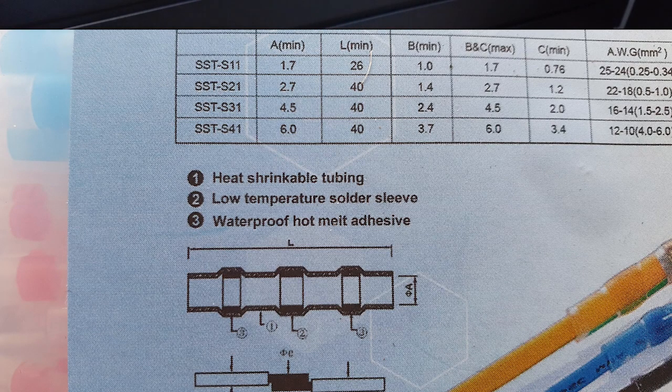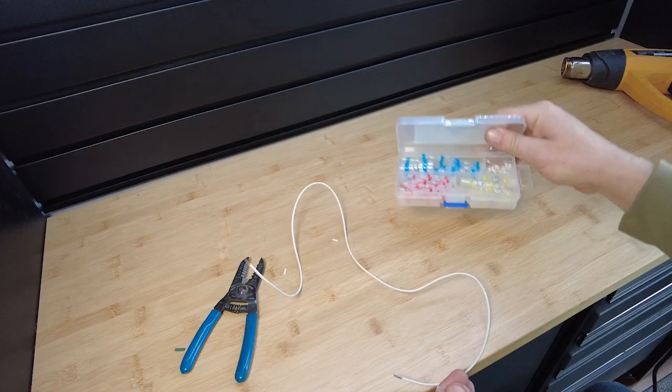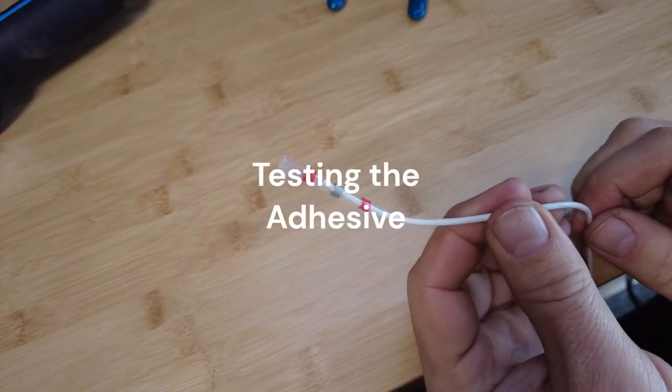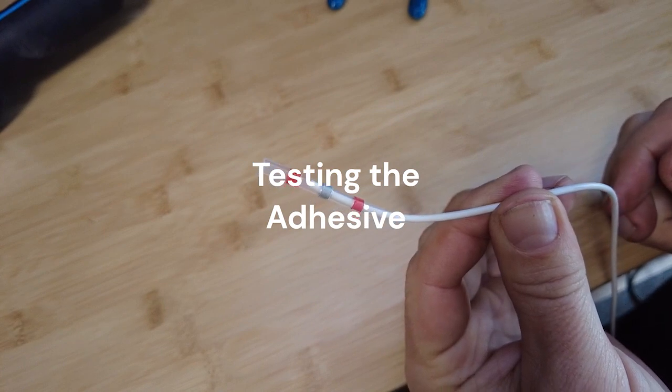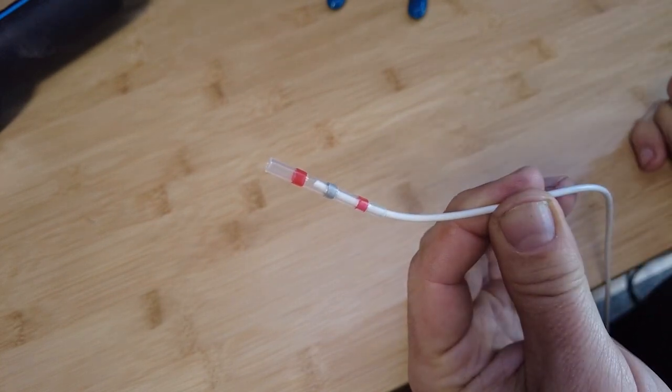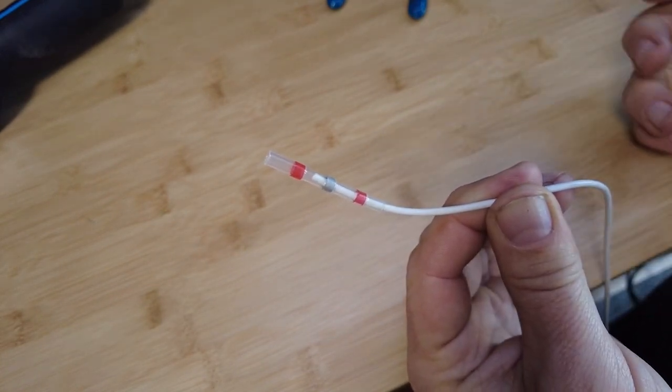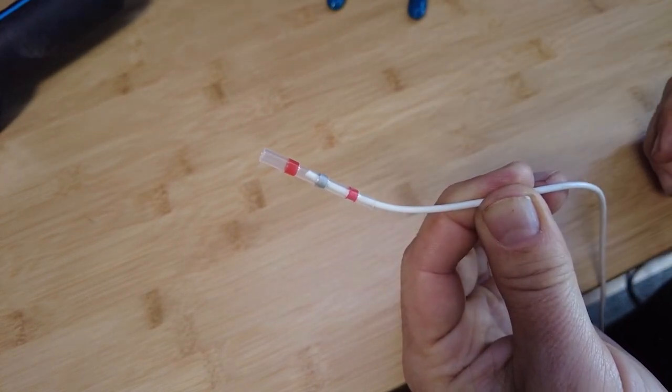So we've got a variety of these connectors that we've just bought online to try them out. Ideally you'd want the solder to shrink at about the same time that the rest of the jacket shrinks and the adhesive would liquefy. And then after a few seconds cool and the wire would be glued into the connector.